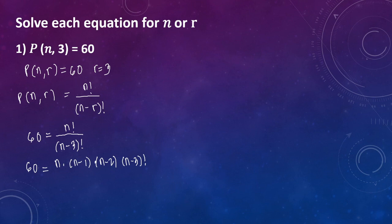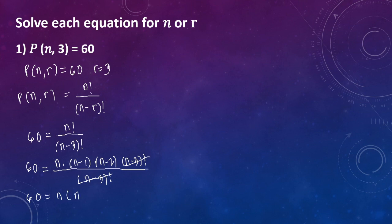As you can see, hanggang kay n minus 3 factorial tayo. So pwede na natin i-cancel yung quantity of n minus 3 factorial — maka-cancel na yan. So ang matitira na lang dito is 60 equals n times n minus 1 times n minus 2.